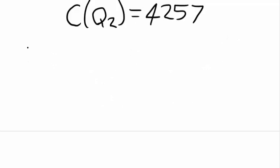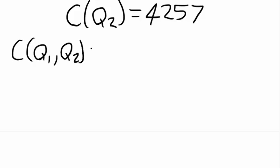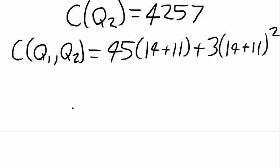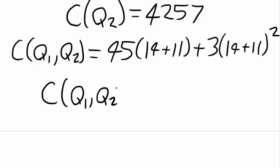Lastly, the cost for quantity 1 and quantity 2 equals 45 times q, where q is 14 plus 11, because it takes into account both q's. That is added by 3 times q squared, where q is 14 plus 11 squared. Using a calculator, we find the cost for quantity 1 and quantity 2 equals 3,000.